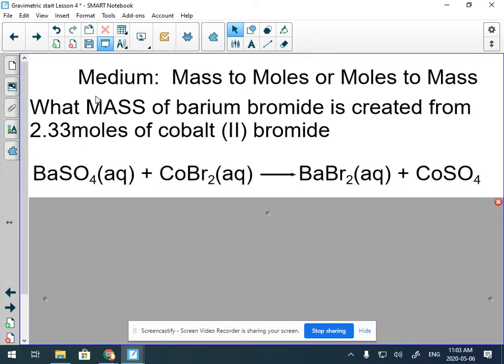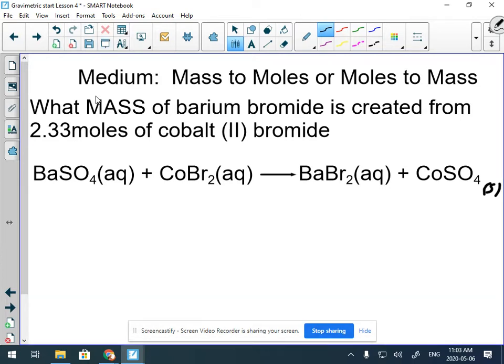We have barium sulfate and cobalt bromide reacting to form something. I'm assuming this is a solid over here. I don't know why I didn't put that. So this is a little bit easier question because it gives us a reaction. We should double check if it's balanced. It is. And let's write down what we know.